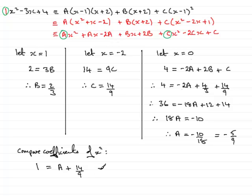So to get a, all I need to do is do 1, take away the 14/9. And that's clearly going to be equal to 9/9, take away 14/9, which is -5/9.